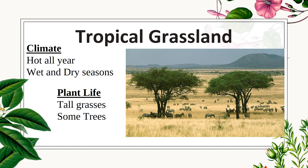Tropical grassland has a climate that's hot all year with wet and dry seasons. For plant life, think about tall grasses and some trees.